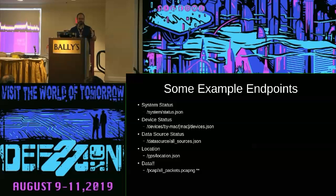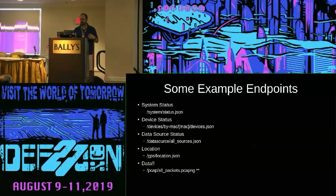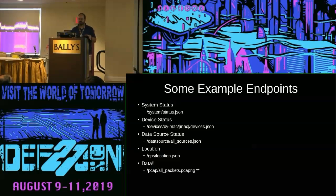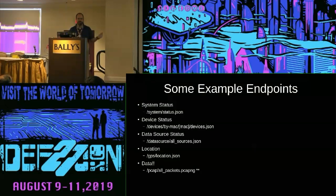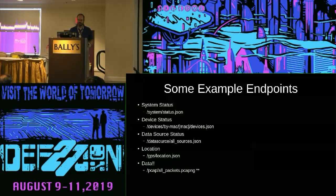You give Kismet a MAC address via the URI and it gives you back all the JSON. Data source status is actually how we do Shootout — each data source has its own big JSON object and you get that back each time you access that URI. The location endpoint is something I haven't messed with too much but I'm really interested in. Kismet can take data from GPSD or NMEA 0183 data over the network.